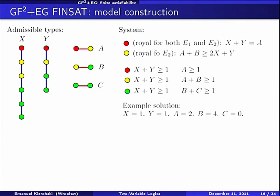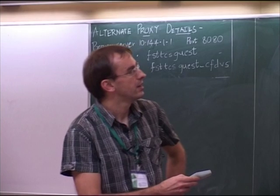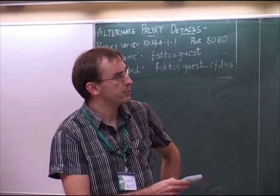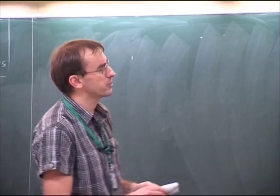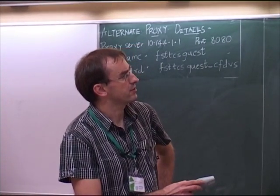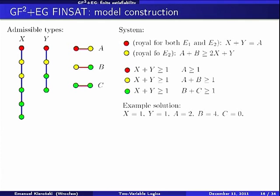The first kind of inequalities are those which say that our guessed one-types will appear in the model. Assuming we guess that red, yellow, and green one-types will be present, we write: x+y ≥ 1, x+y ≥ 1, x+y ≥ 1. This ensures that in blue classes we will have red, yellow, and green elements, and similarly for red classes. An example solution is x=1, y=1, a=2, b=4, c=0.